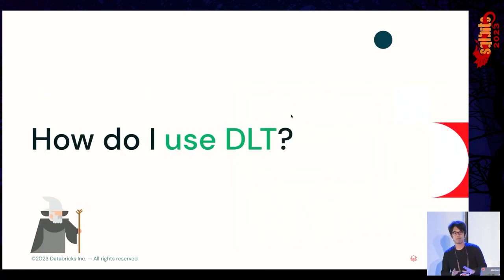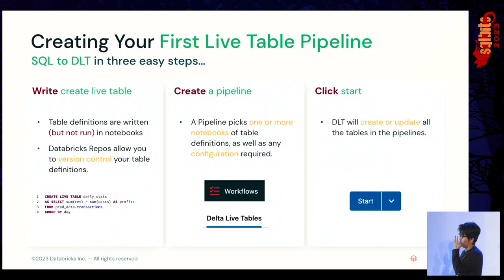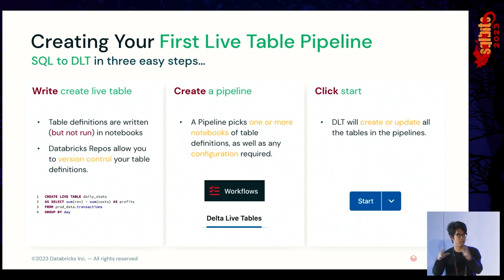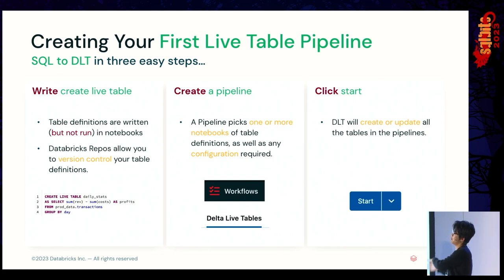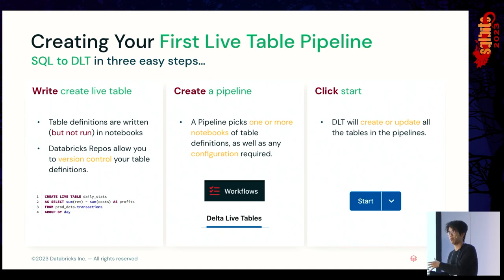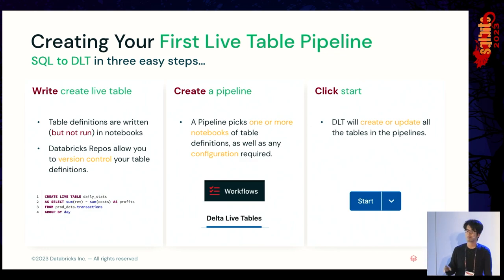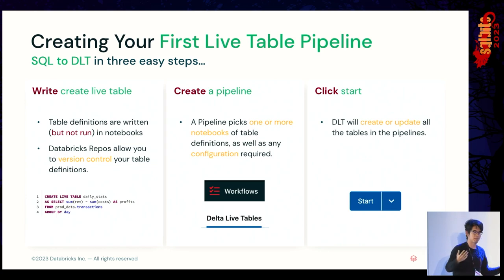How do you use it? Three steps: First, write your definitions. Because this is declarative, you declare your data model and create your definitions — in a notebook in Databricks, which you can version-control using the repos functionality. Second, create a pipeline referring to those notebooks. The pipeline is what executes and keeps the model up to date; the notebook is just where the model is stored. Third, just start. Every time you start, the pipeline runs and makes sure the model is up to date — that's why they're called live tables.